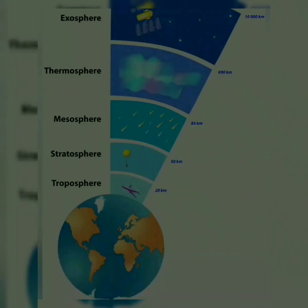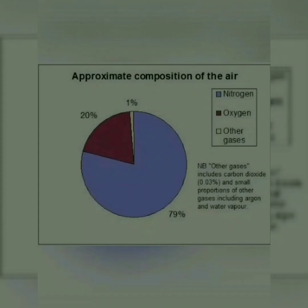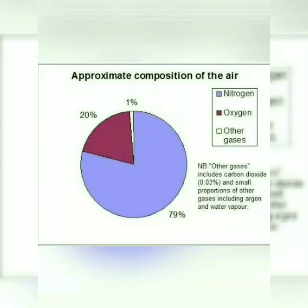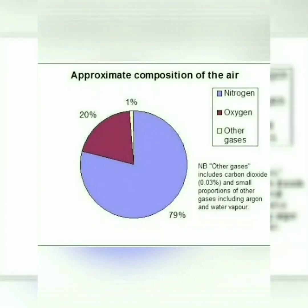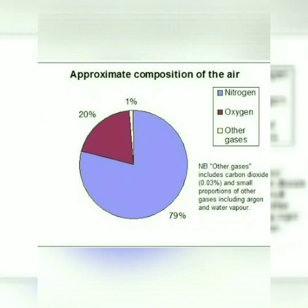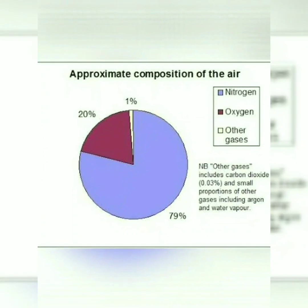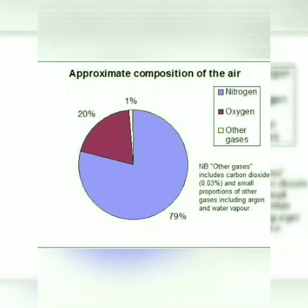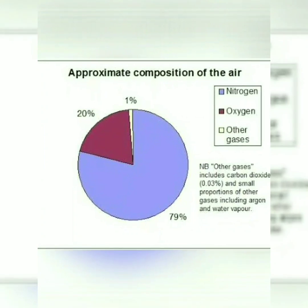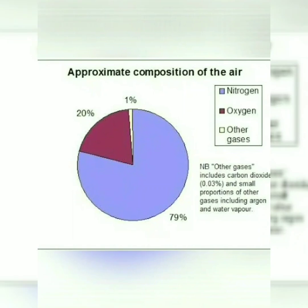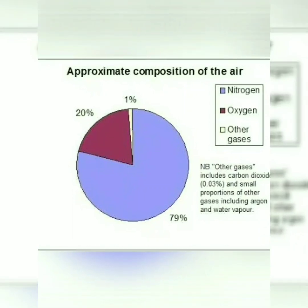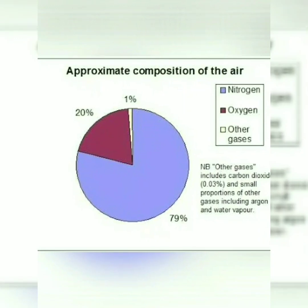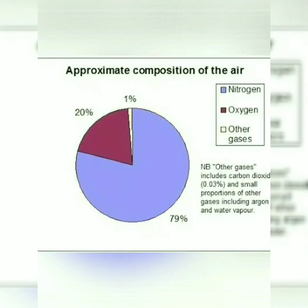The atmosphere extends up to 1600 kilometers from the Earth's surface. The atmosphere acts like a blanket, preventing us from ultraviolet rays — just as we use a blanket to cover ourselves, the atmosphere similarly covers and protects the Earth. In this atmosphere there are many gases.